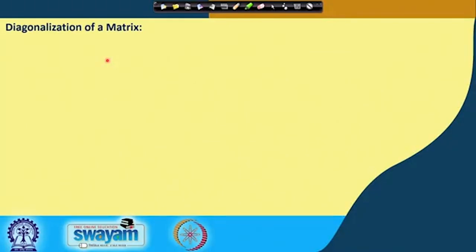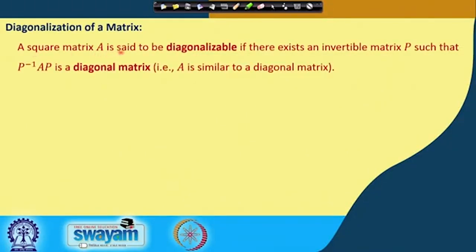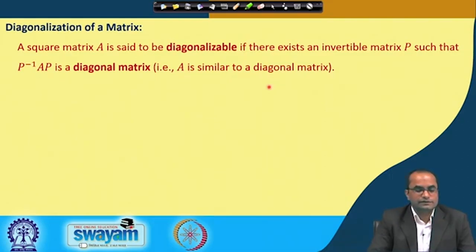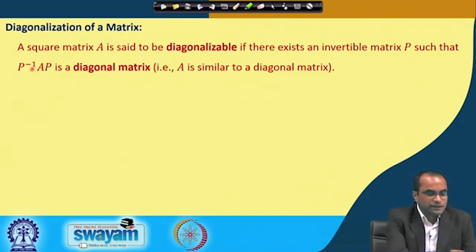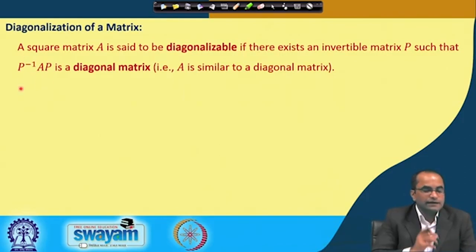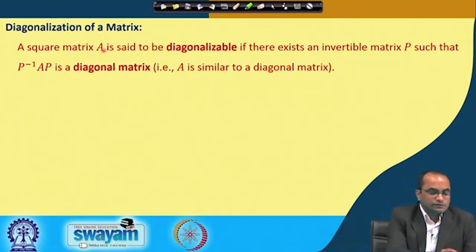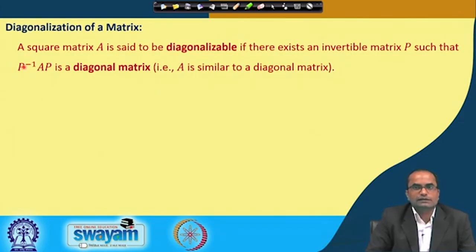A square matrix A is said to be diagonalizable if there exists an invertible matrix P such that P inverse A P is a diagonal matrix. In other words, A is similar to a diagonal matrix. A is called diagonalizable if we can write P inverse A P as a diagonal matrix, where P is an invertible matrix.